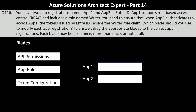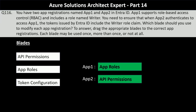Question 116: You have two app registrations named App1 and App2 in EntraID. App1 supports role-based access control and includes a role named Writer. You need to ensure that when App2 authenticates to access App1, the tokens issued by EntraID include the Writer role claim. You should define the Writer role in the App Roles blade in App1, which allows the Writer role to be assigned to service principals or users accessing App1. In App2, you add an API permission to request access to App1, specifically the permission that includes the Writer role, ensuring App2 is granted the required permissions when accessing App1.